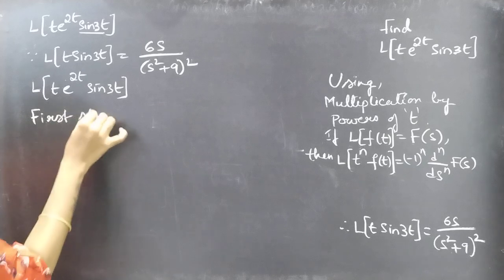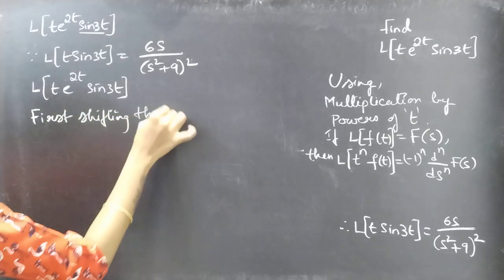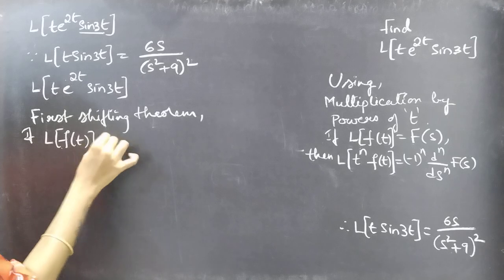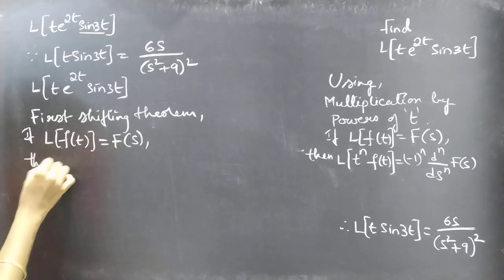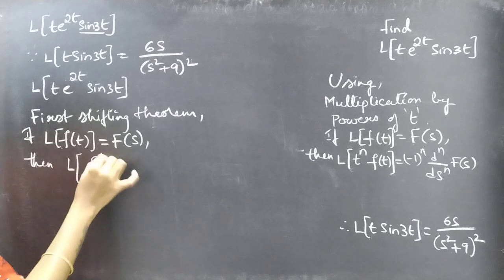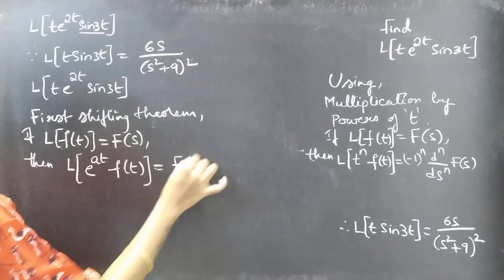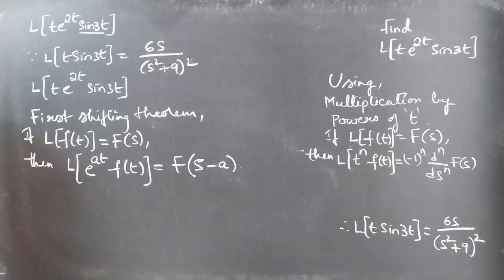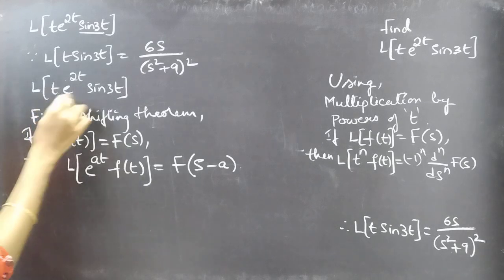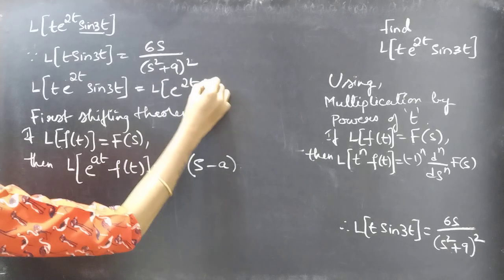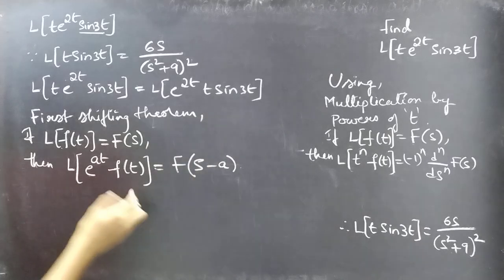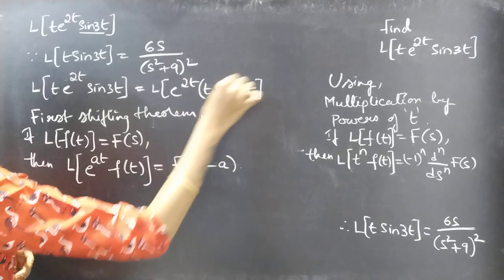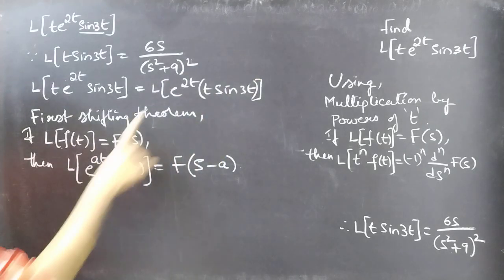The first shifting theorem states: if L{f(t)} = F(s), then L{e^(at) · f(t)} = F(s - a). Now we are going to apply this formula. We can write the expression as L{e^(2t) · t·sin(3t)}, treating t·sin(3t) as one function f(t).